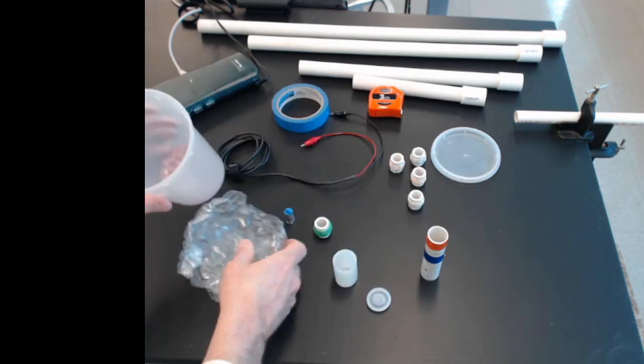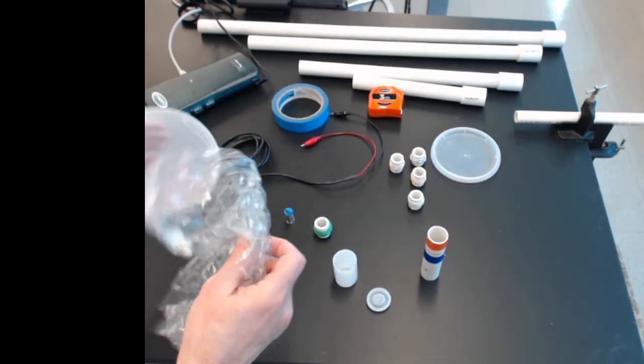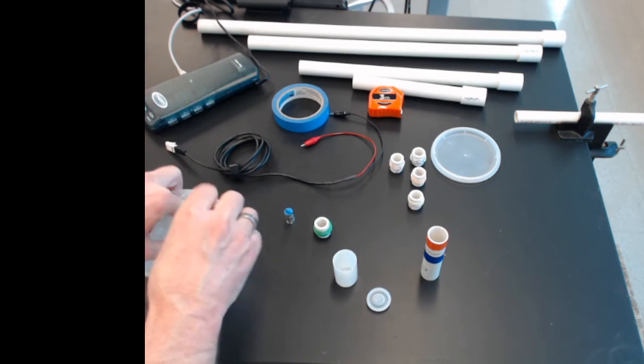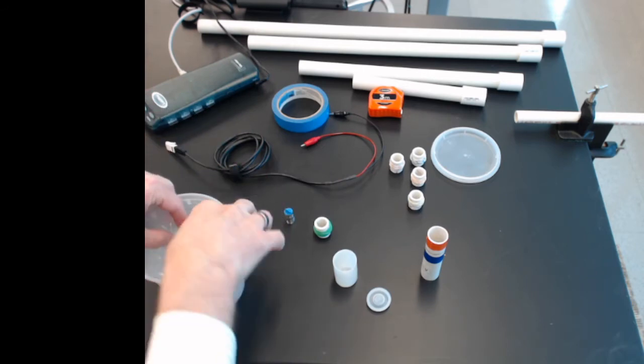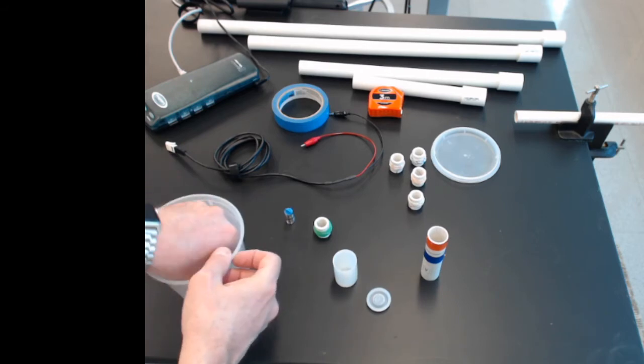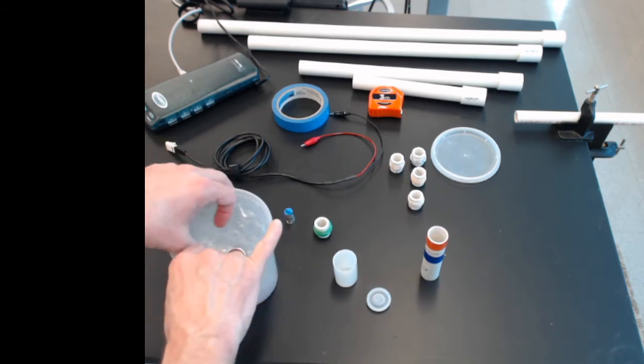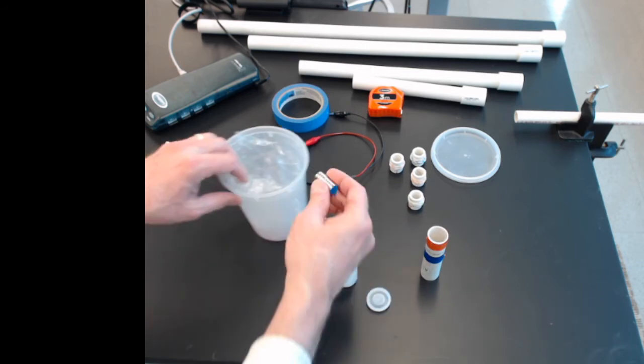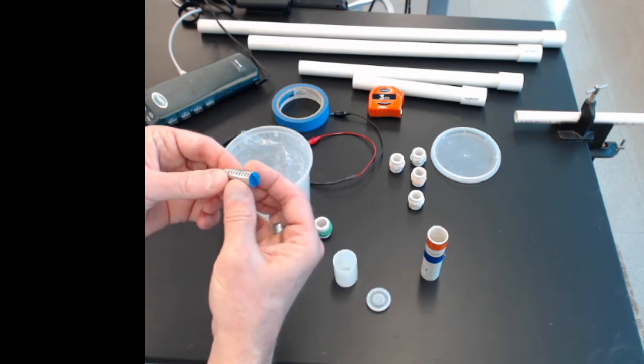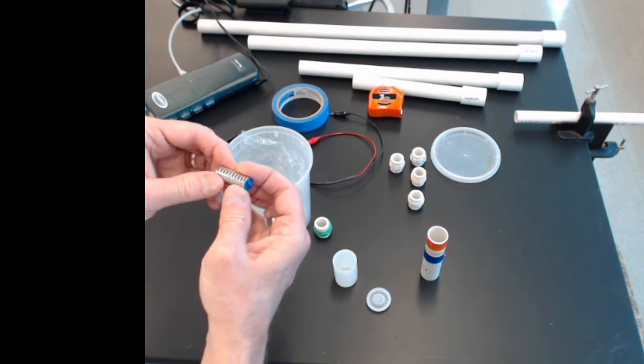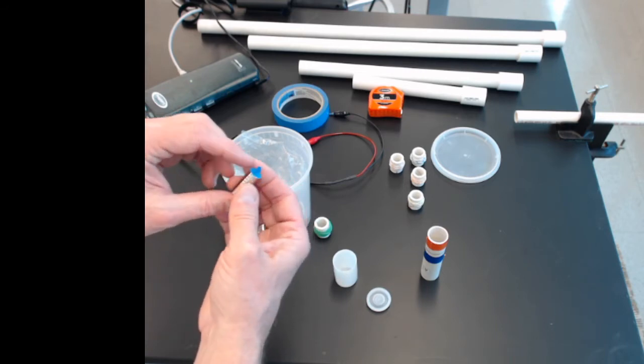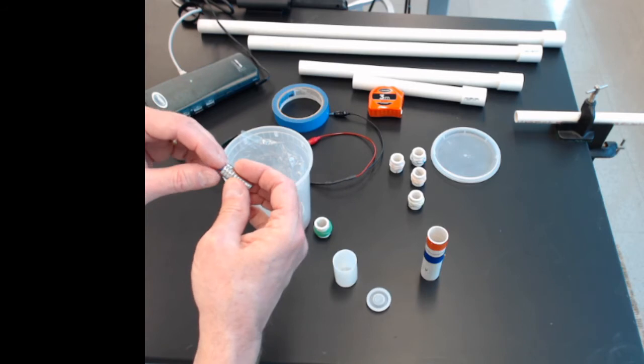The canister also has some bubble wrap in it. We're going to use this to catch the magnet when we drop it. So we'll just drop the magnet into the canister. The ceramic magnets, they're a little bit brittle. So if you dropped it on the floor, it might chip and crack and break. If that does, you can get a replacement from your instructor.